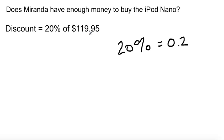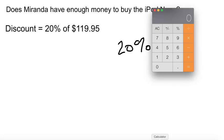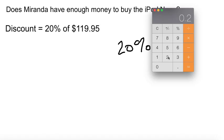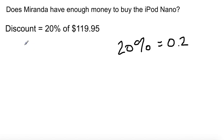Let me show you one way first, and then another way. To find the discount: $119.95 times 0.2. So 20% of $119.95 is $23.99. That's the discount — that's one way of doing it.